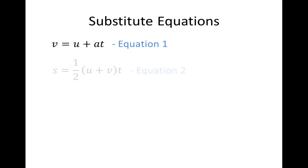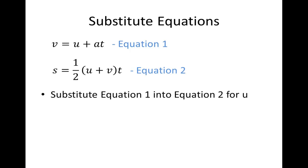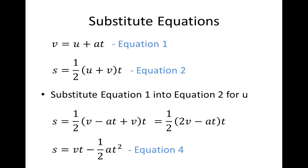Again, starting off with equation 1 and equation 2, we substitute equation 1 into equation 2 for U, where U is equal to V minus AT. And what we get is S is equal to VT minus a half AT squared. So we'll call that equation 4.